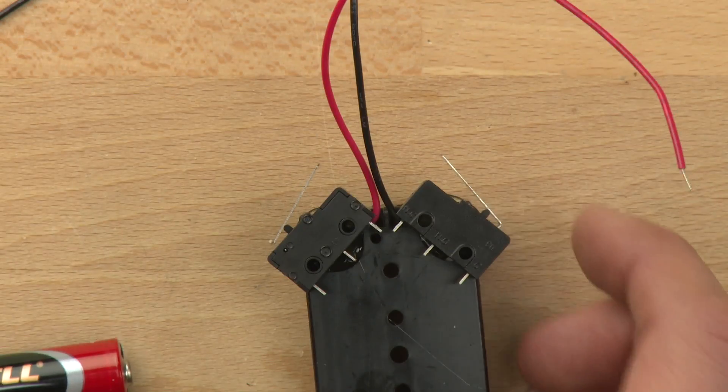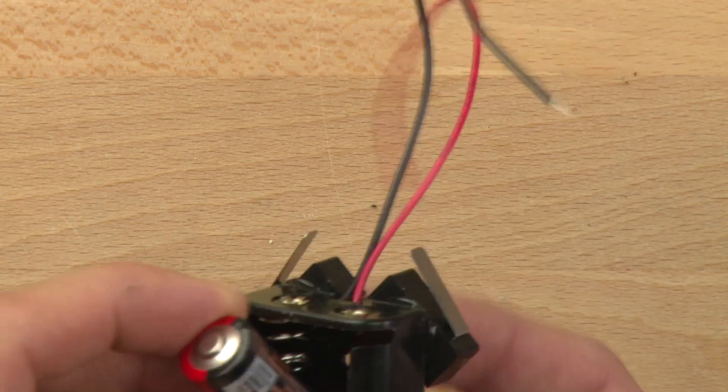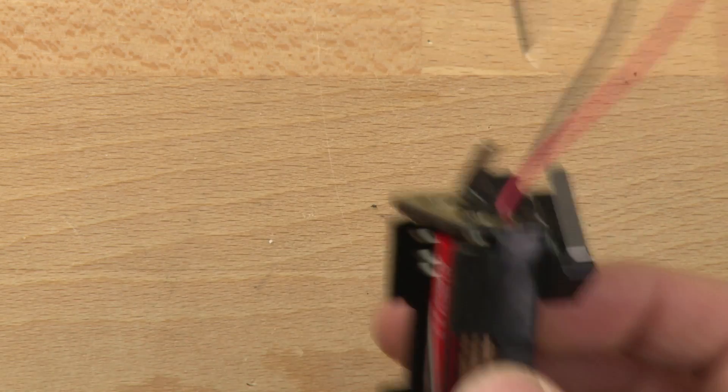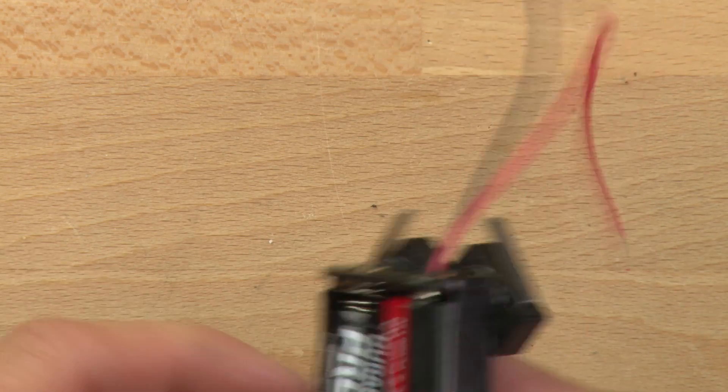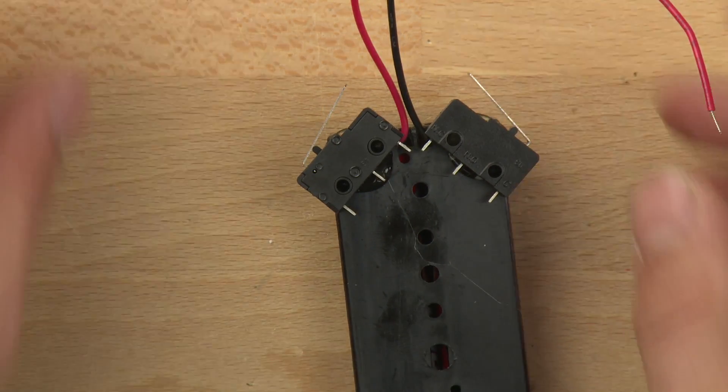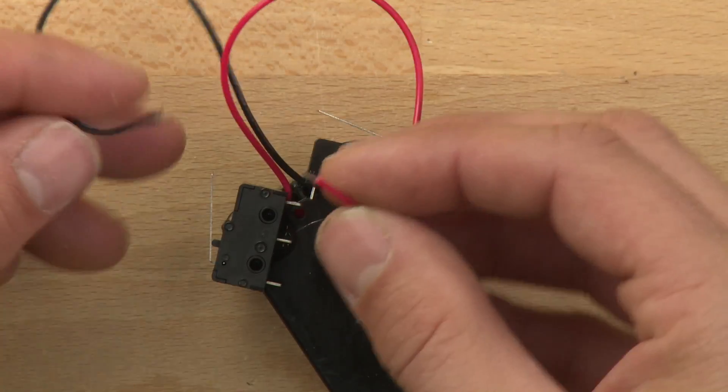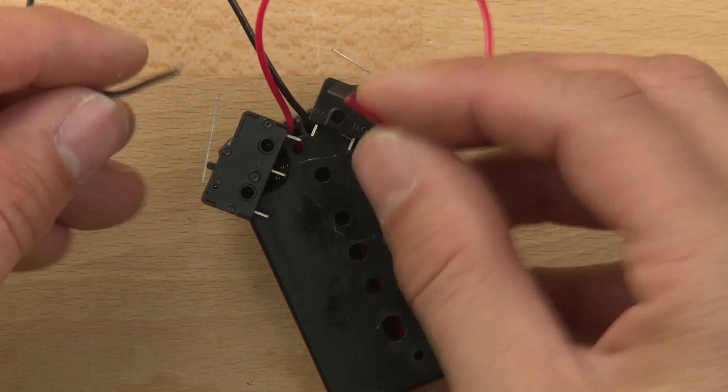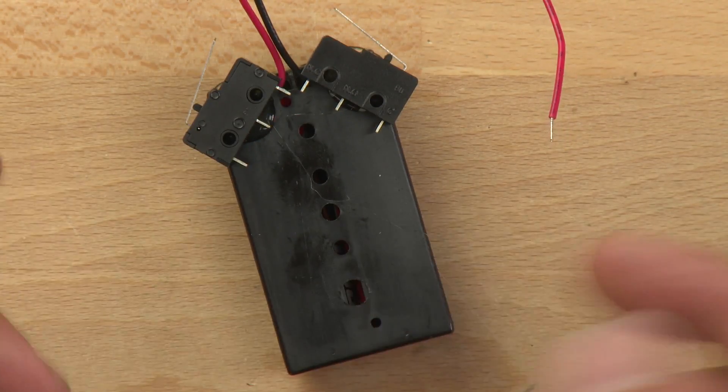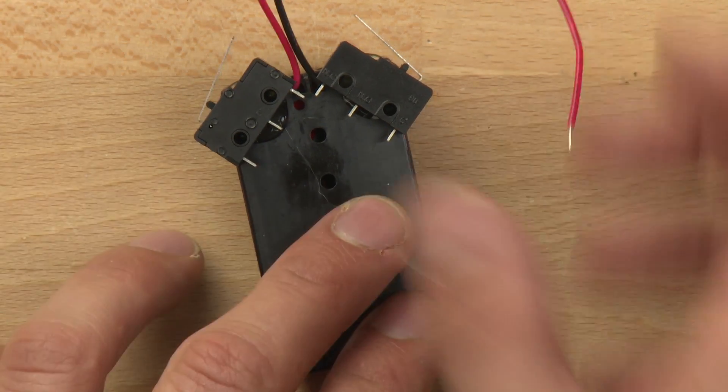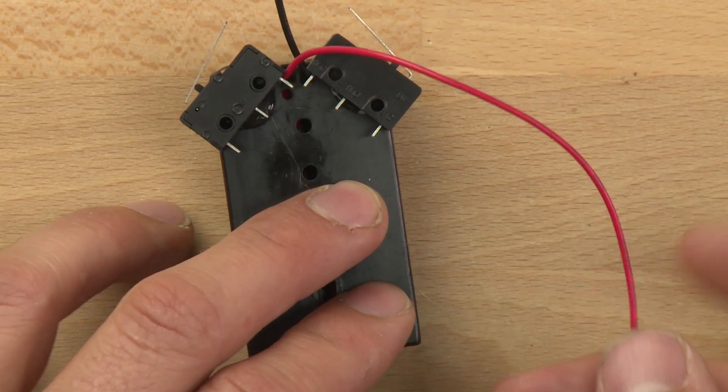So now what we're going to do is we're going to put some batteries in, and this is basically just to provide some weight to help hold the battery holder and switches in place. Now when you do that, be careful because you don't want these two wires to touch. If the two wires touch, they'll short out the batteries and melt the housing and cause problems for you.